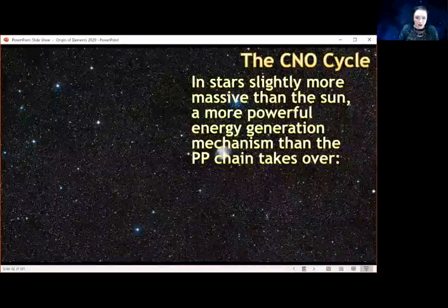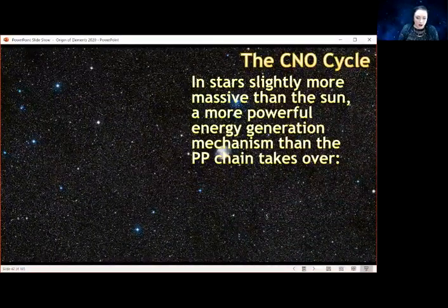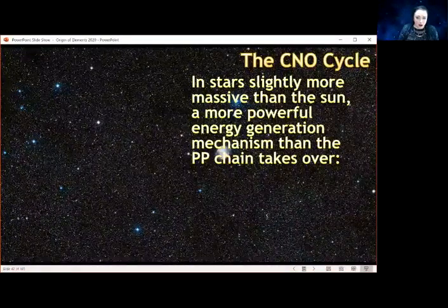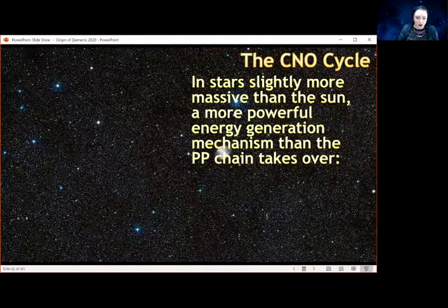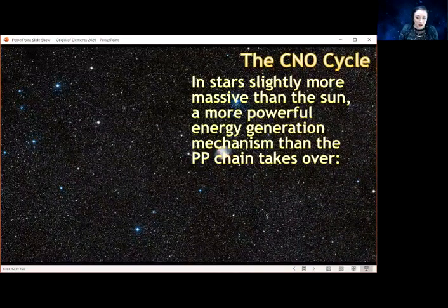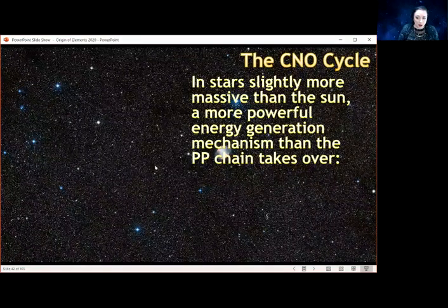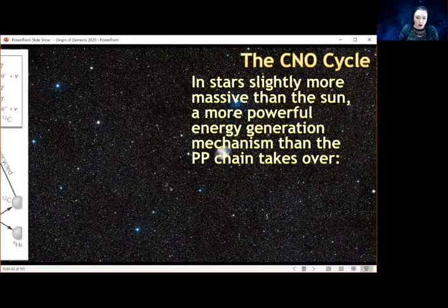Inside real stars, you have not just hydrogen and helium, but later on you've also got carbon, nitrogen, oxygen, and other elements. So you can do other processes too. I'm going to talk about the CNO cycle. As well as the proton-proton chain, this is another way to make helium from hydrogen.